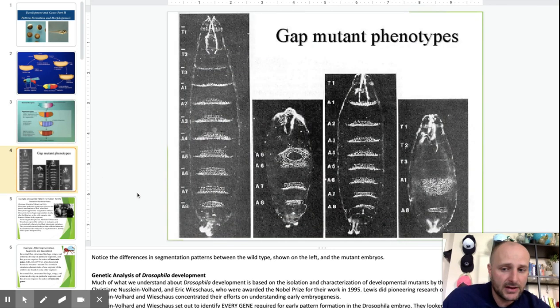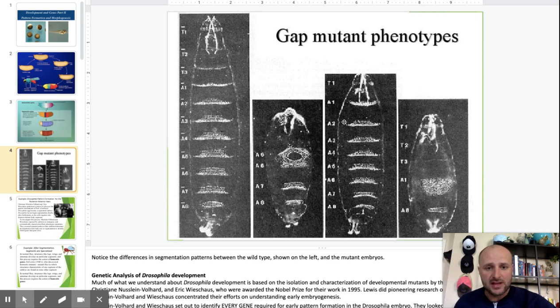This slide shows gap mutations. This is normal, and these things are all mutated in some way. If it's not even, it's not regular, it's not what it's supposed to look like. Either there's not enough space, or certain segments are fused together, or certain segments are just missing, things like that.